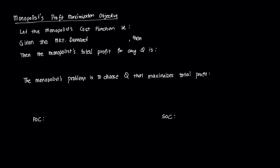For our example, let the monopolist's cost function be C, where C is some function of Q. We can define a concept called the marginal cost, which is the additional cost per additional unit. This derivative pertains to our marginal cost, and we believe that marginal cost is positive, because any additional unit will increase the cost that the monopolist will incur.